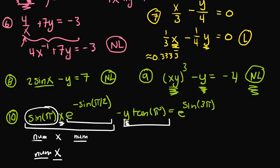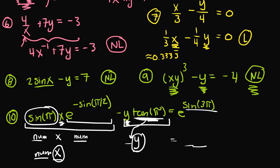The second term: tangent of π is just some number, so it's just a coefficient times y. y is not raised to any power other than 1 and is not multiplied with any other variable. The right-hand side, e raised to the sine(3π) power, is also just some number. Since x and y are not raised to any power other than 1, not involved in any trigonometric, logarithmic, or exponential functions, not multiplied together, and not in the denominator, this equation is linear.